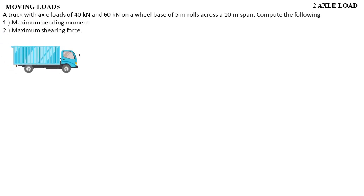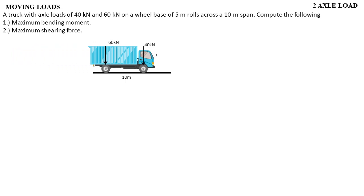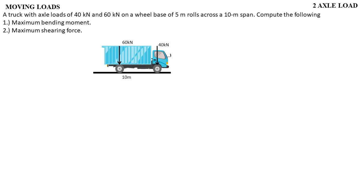So this is our truck — it has a load of 40 kN and a 60 kN, and we have a 10 meter span. Let's say this is a beam, and this truck rolls across our beam. As it passes, it produces a moment and a shearing force in the beam. So we will compute the maximum moment and the maximum shear produced as it passes through.